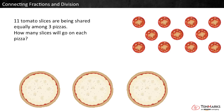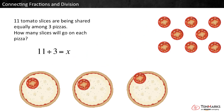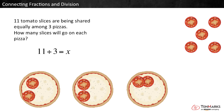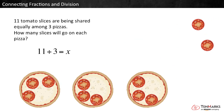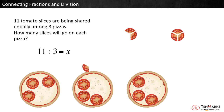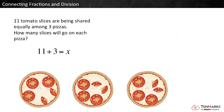Finally, look at an example with a fraction greater than 1. Eleven tomato slices are being shared equally among 3 pizzas. How many slices will go on each pizza? A division equation that represents this problem is 11 divided by 3 equals x. Each pizza can have 3 whole slices, but there are 2 slices left over. If the 2 slices are divided among the 3 pizzas, each pizza will get 2 thirds of a slice. So each pizza has 3 and 2 thirds slices in all, and 11 divided by 3 equals 3 and 2 thirds.